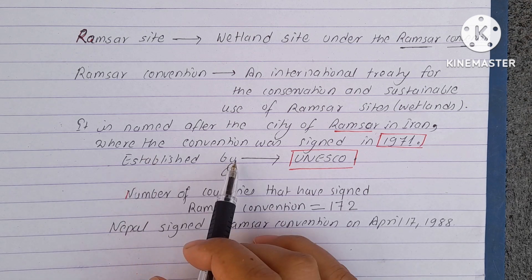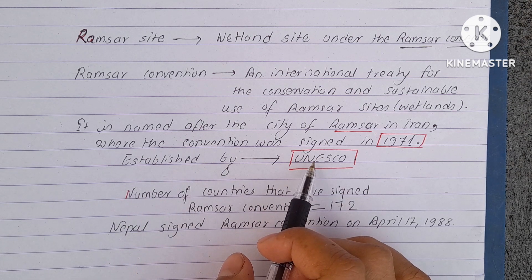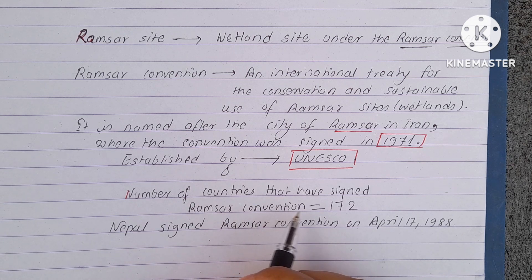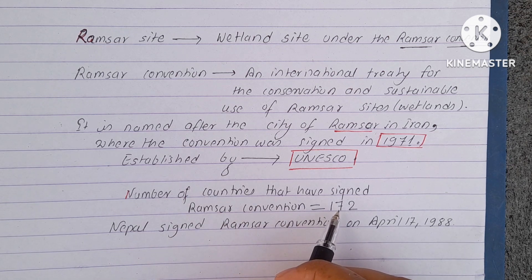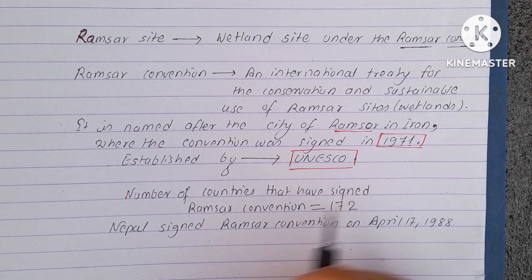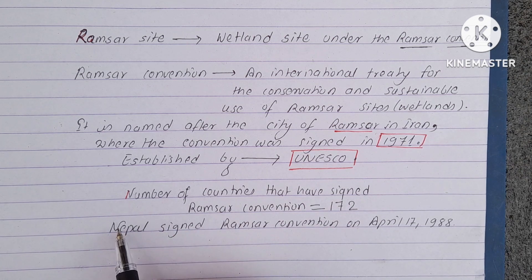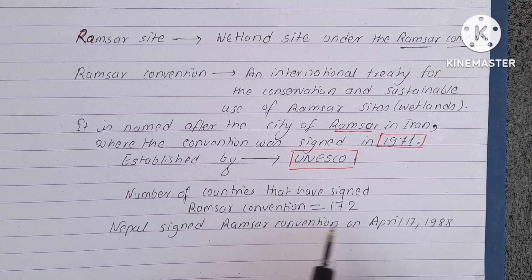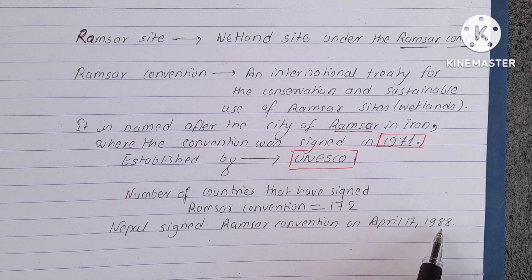It was established by UNESCO and the number of countries that have signed the Ramsar Convention are 172. Among these 172 countries, Nepal is also one. Nepal signed the Ramsar Convention on April 17, 1988.